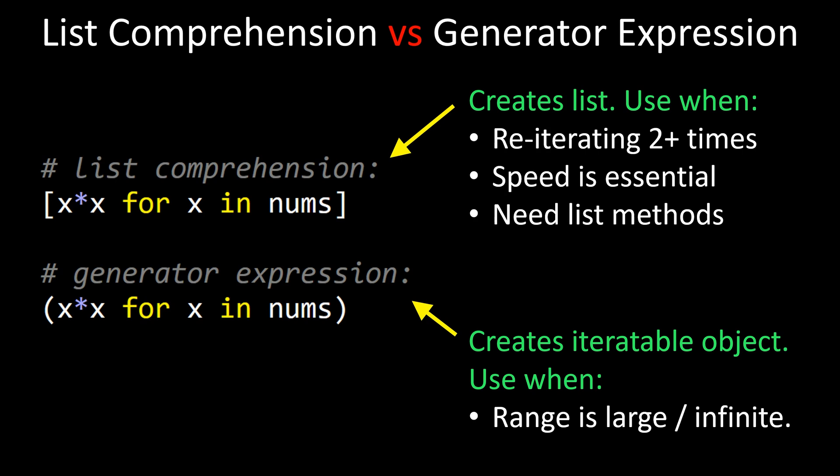So list comprehension actually creates a list of objects, computes all the elements in the list, and stores the entire list in memory, while the generator expression stores just the iterable object and computes every element in the list one at a time as it's being queried.